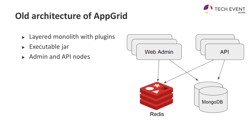The old architecture of App Grid was a typical monolith — one big executable. We ran it with API nodes and admin nodes: a web UI and REST API going to cache and the database, with some other components like RabbitMQ and Redshift for analytics.